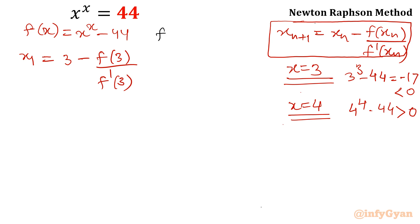So derivative becomes x power x times 1 plus ln x. We are familiar with this function. And then 44 derivative is 0, constant.